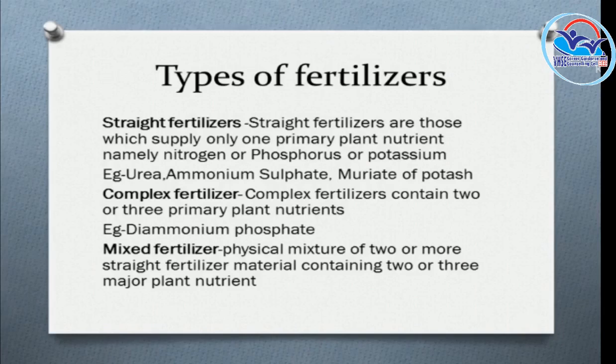Ammonium sulfate is a nitrogen fertilizer. Complex fertilizers contain two or more of the three primary nutrients. For example, diammonium phosphate (DAP) contains nitrogen and phosphorus.